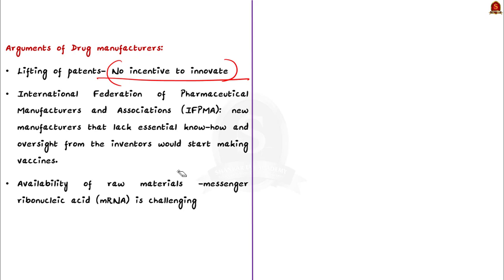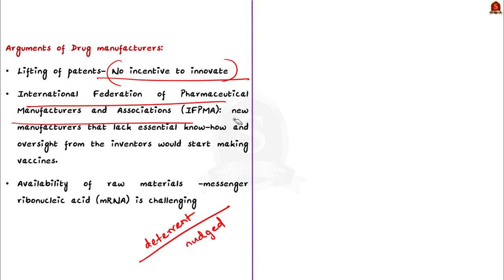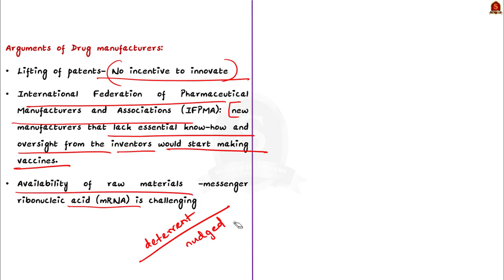Another argument is that IPR are important because of the money and effort that goes into research and development. Lifting patents would be a huge deterrent to investing heavily in vaccine development, especially during future pandemics. According to the Federation of Pharmaceutical Manufacturers and Associations, if the WTO approves the Biden proposal, new manufacturers lacking essential know-hows and oversight from investors would start making vaccines — this would do more harm than good, as vaccines made by these companies may not be perfect and could cause potential side effects. They also argue the biggest challenge is not IPR but the availability of raw materials.